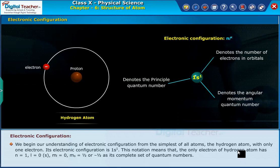This notation means that the only electron of hydrogen atom has n=1, l=0 of s, mₗ=0, mₛ=±½ as its complete set of quantum numbers.